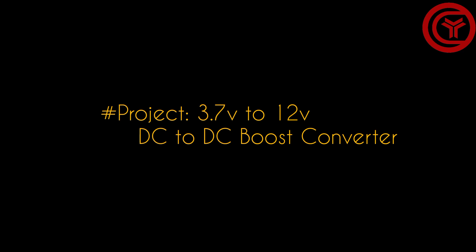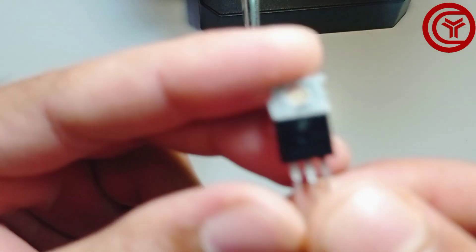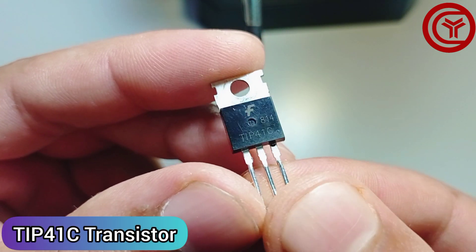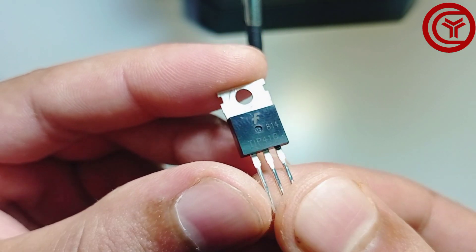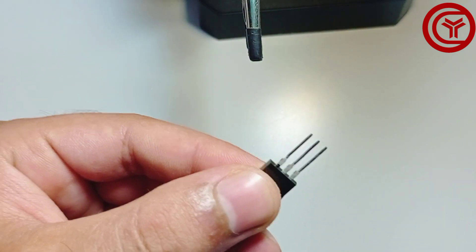Guys, today we will make best DC to DC boost converter circuit. We will use here TIP41C NPN transistor to boost 3.7V to 12V.